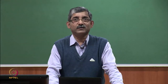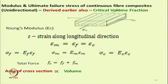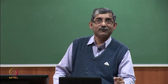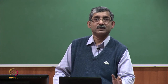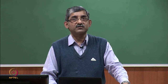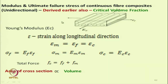Hello everyone. We will continue with the textile reinforced composites. In the last class we discussed critical length, and now we will discuss how to calculate the modulus and ultimate failure stress of continuous fibre composites like unidirectional composites. The assumption is that the fibres are in continuous form, so the strain along the longitudinal direction for both the matrix and the fibres will be the same as that of the composite.